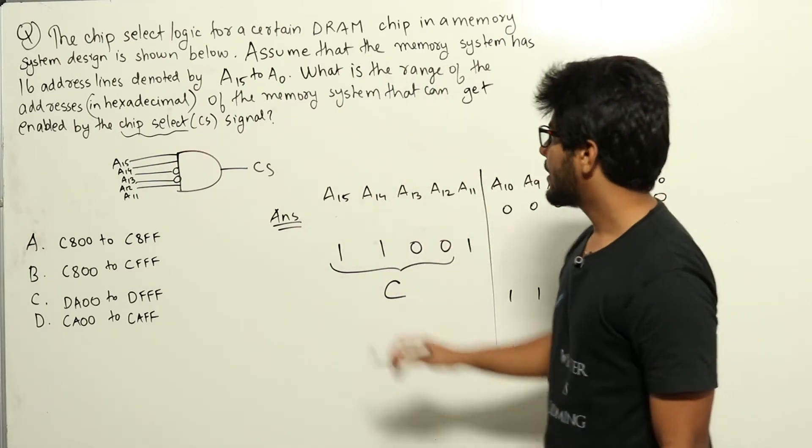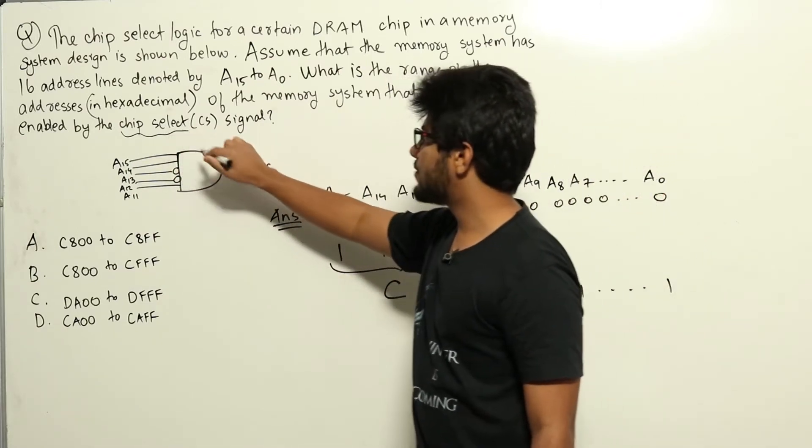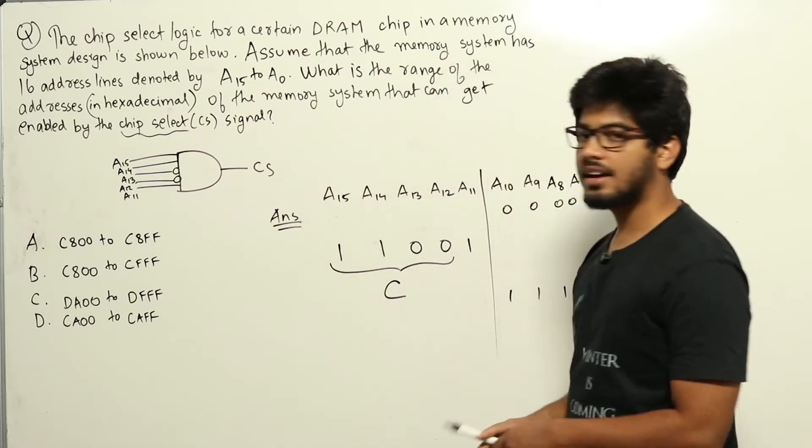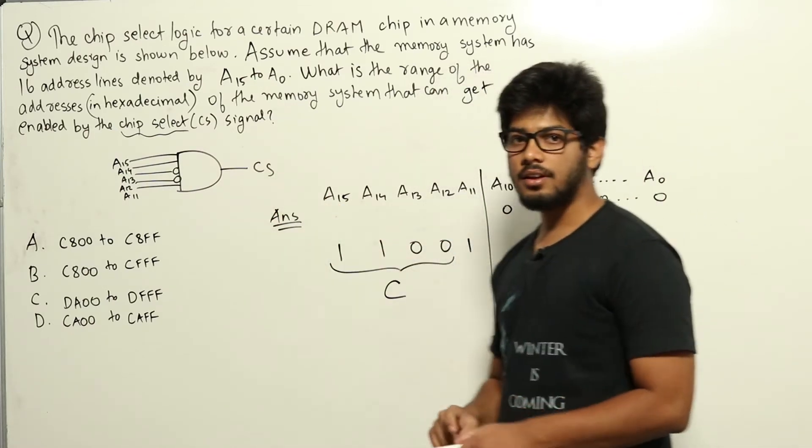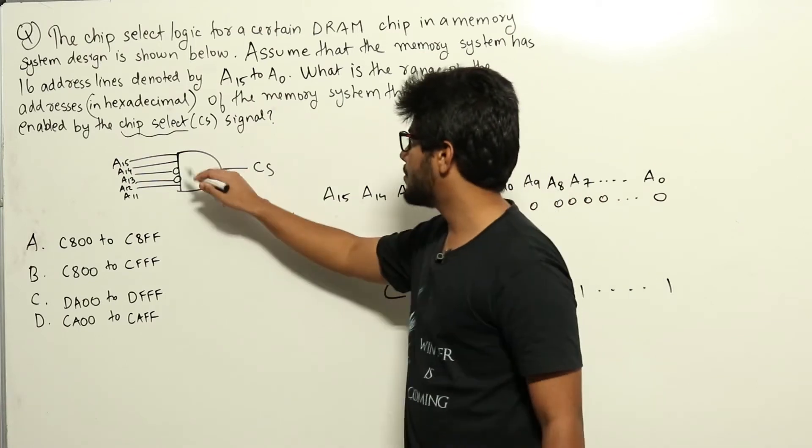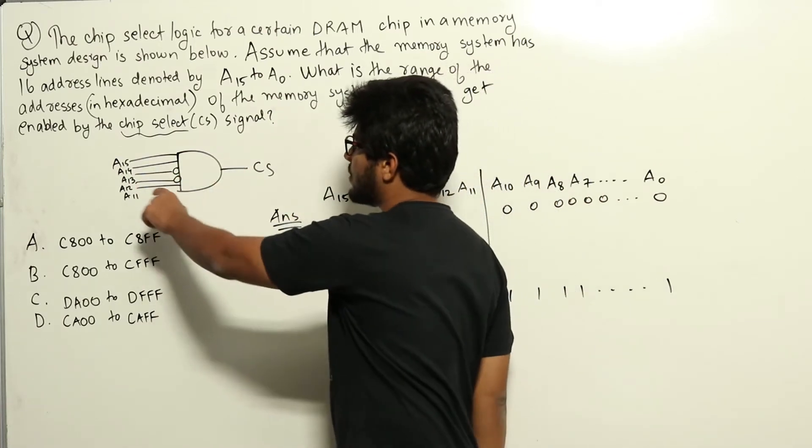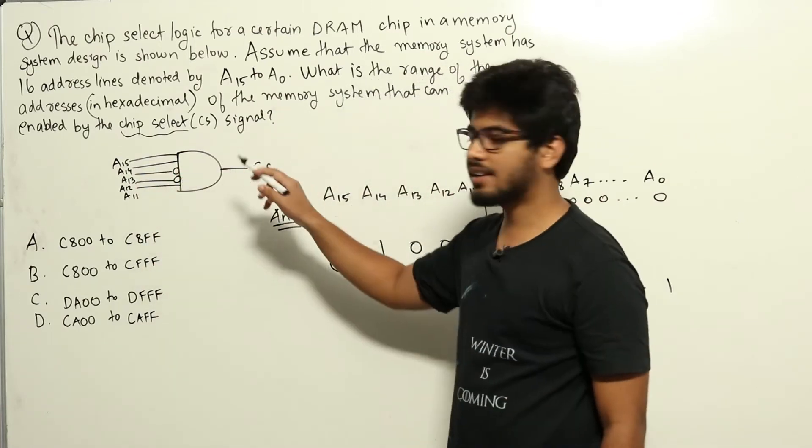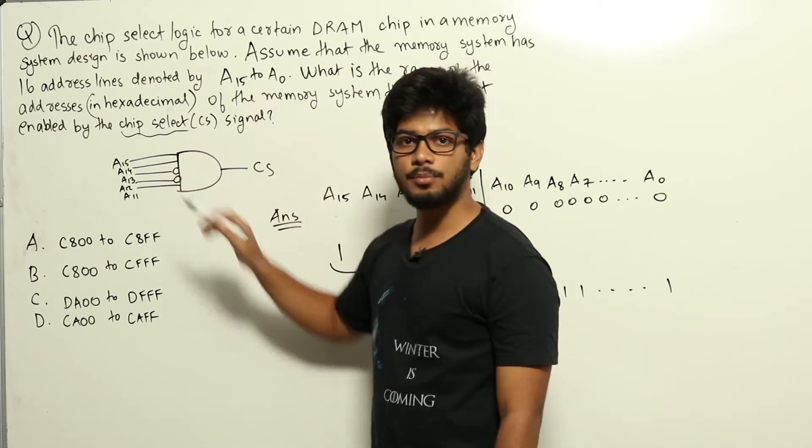Now whenever the CS signal is 1 it will be enabled, and they are asking for which all addresses the signal will be enabled. For the signal to be enabled all the inputs should be 1. This is an AND gate, so an AND gate will have an output of 1 if all the inputs are 1.